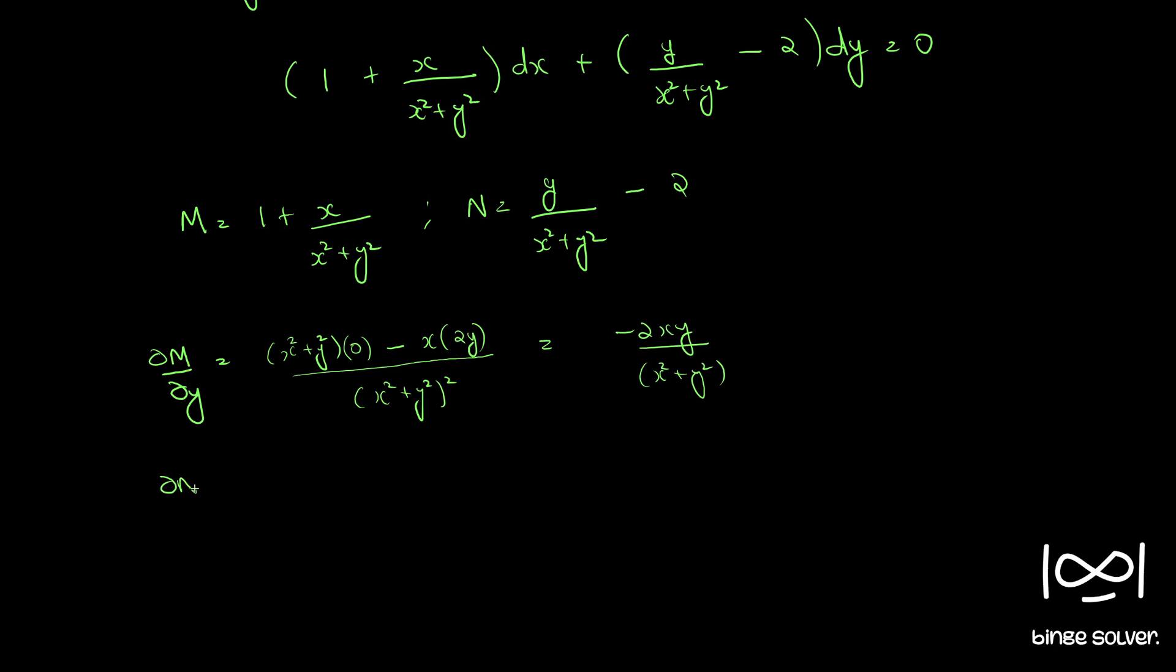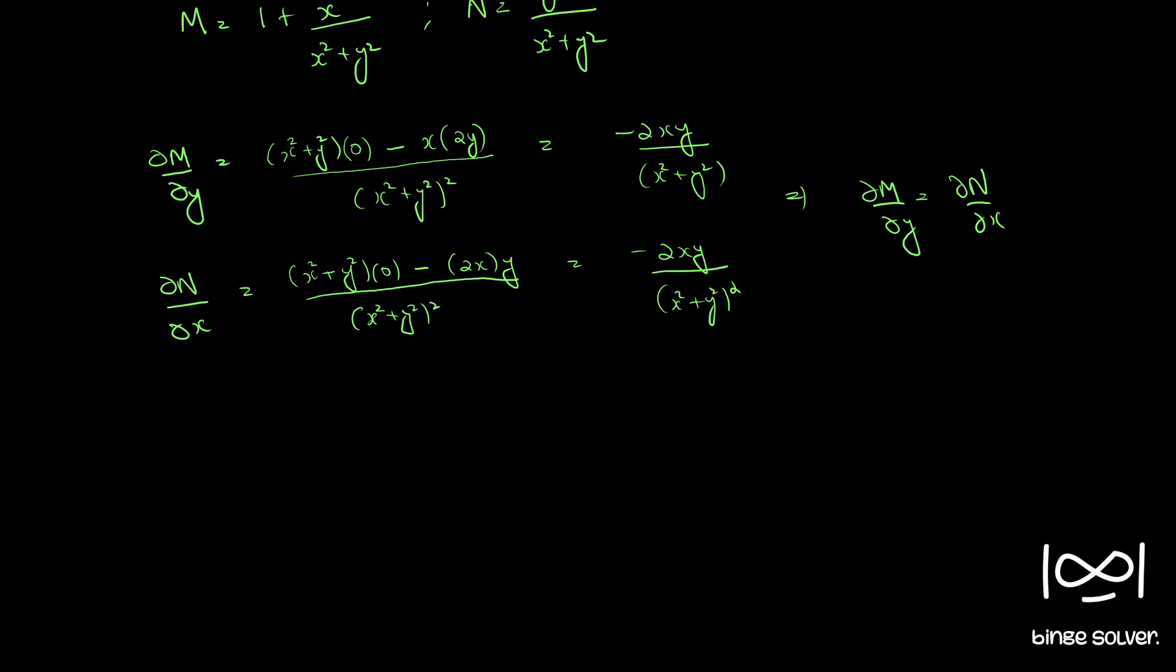And ∂n/∂x is equal to, similarly applying the u by v rule, we can get 0 minus 2x into y. Therefore, ∂m/∂y is equal to ∂n/∂x in this case. So we made the rearrangement and therefore the differential equation is exact.